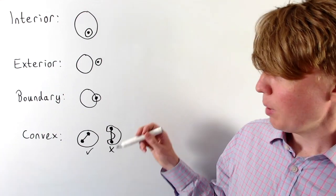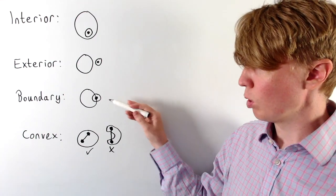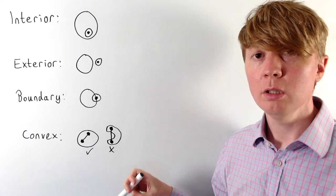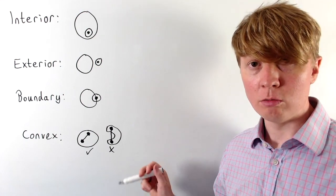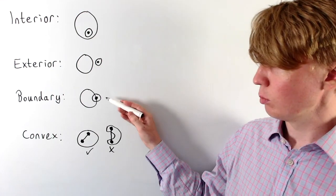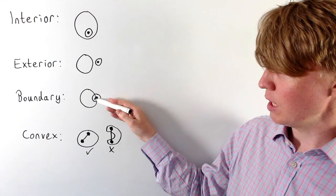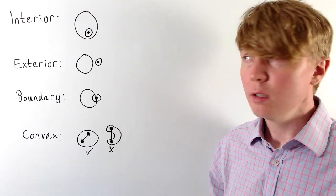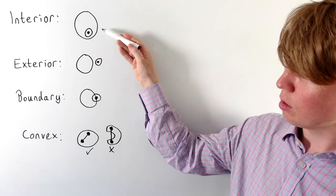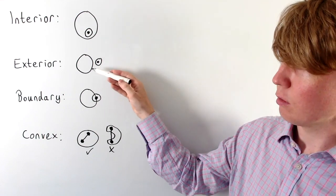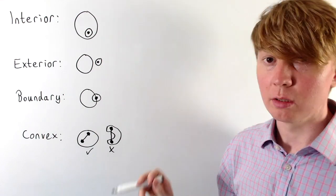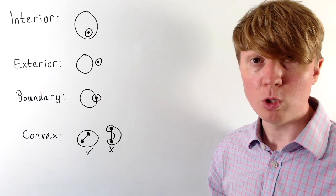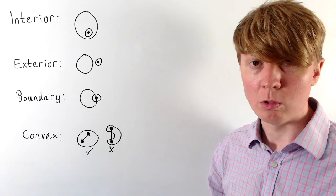A boundary point is one where however small you take the radius of your circle, any ball you draw around your point will contain some interior and some exterior points. Interior points belong to your set, exterior points don't, but boundary points can be within or not within your set.